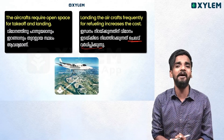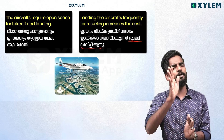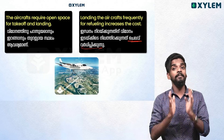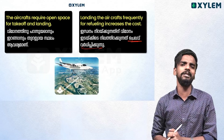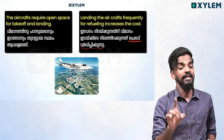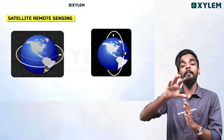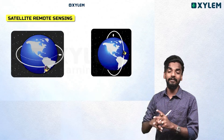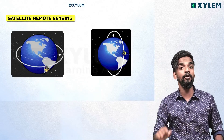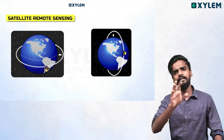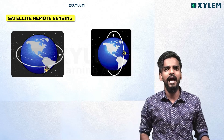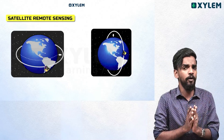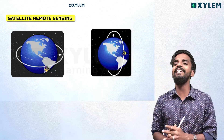So, important limitations of aerial remote sensing are shaking, impracticality for large areas, and high cost. Now we will move to satellite remote sensing. We are going to look at geostationary satellites and sun-synchronous satellites, and we are going to show you the two details.